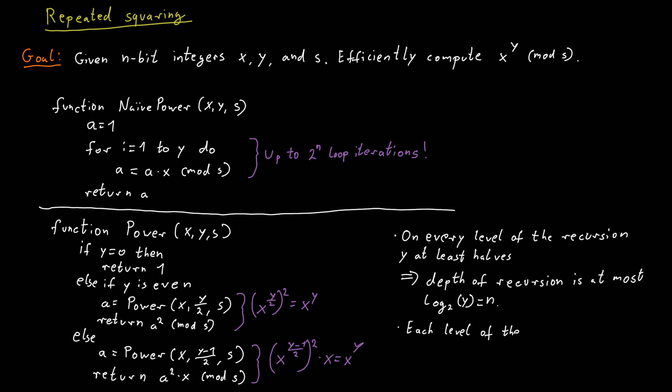And each step of the recursion can also be run efficiently because the only thing we're really doing is we do some very basic comparisons and operations. We square a number or we multiply two numbers mod s. And we ensure that all the numbers that we're dealing with are always at most s because all our computations are done mod s.